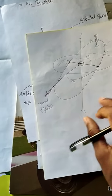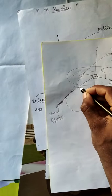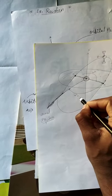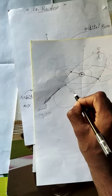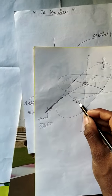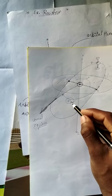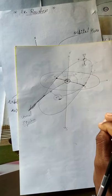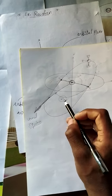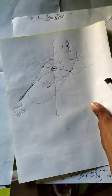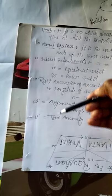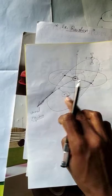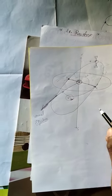The angle from the vernal equinox pointing to the ascending node is known as capital Greek letter Omega (Ω). This Omega is known as the longitude of ascending node. We will be talking about all these parameters, so don't worry. This is the longitude of ascending node.